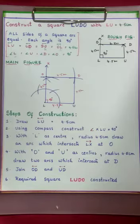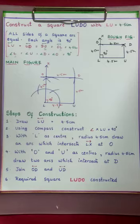This is the way to construct a square. We have now learned all types of quadrilaterals — how to construct parallelogram, rhombus, rectangle, and square. Today, practice this construction of rectangle and square. Do the same sums as assignment. I end my class with this. I hope you are enjoying the constructions, children. Thank you.